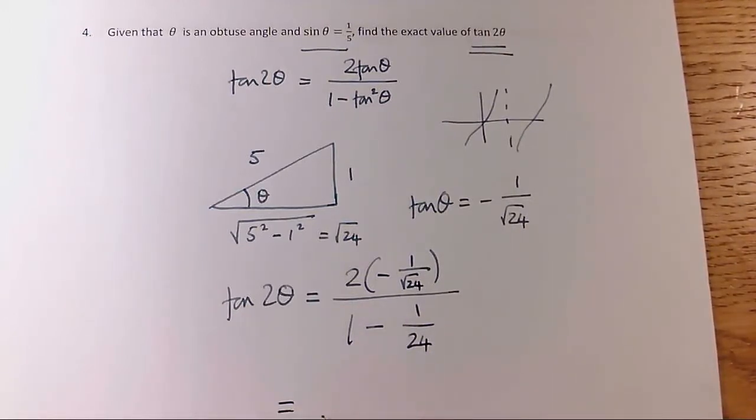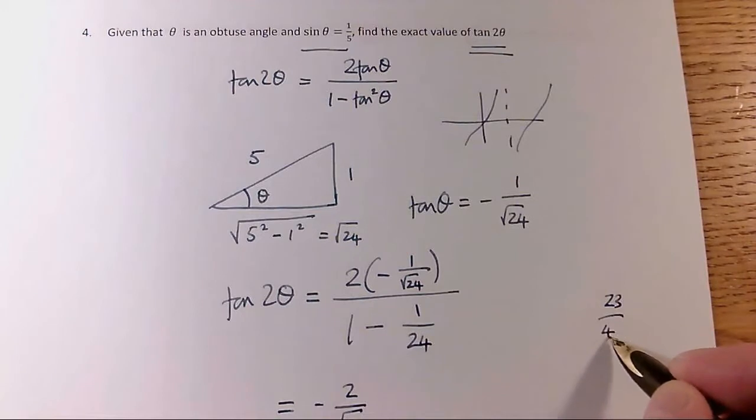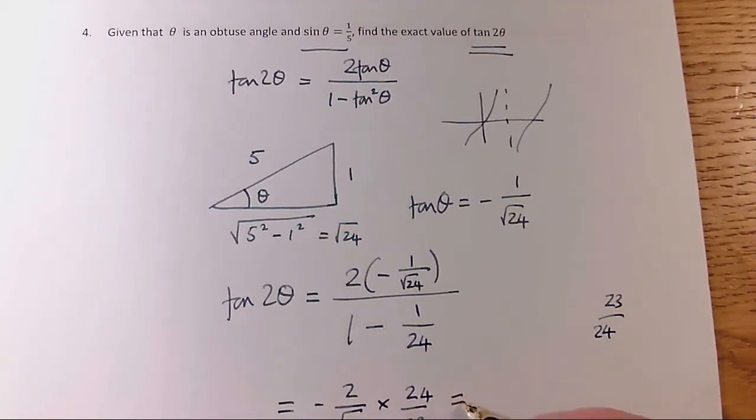So it is going to be minus 2 over √24 on the top, and then the bottom is going to be 23 over 24, but I'm dividing by that, so I'm going to need to multiply it by 24 over 23, and 24 over √24 is √24, so it's minus 2√24 over 23.